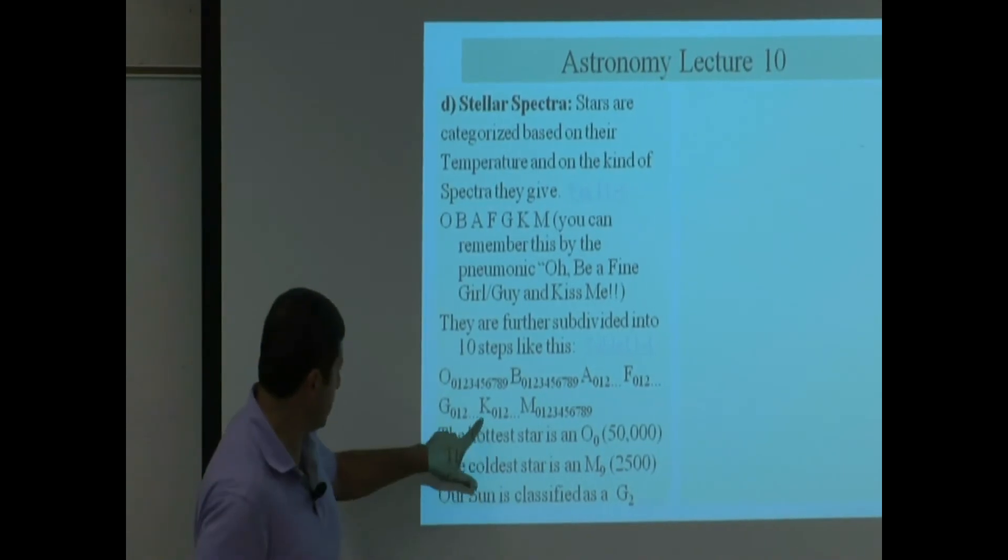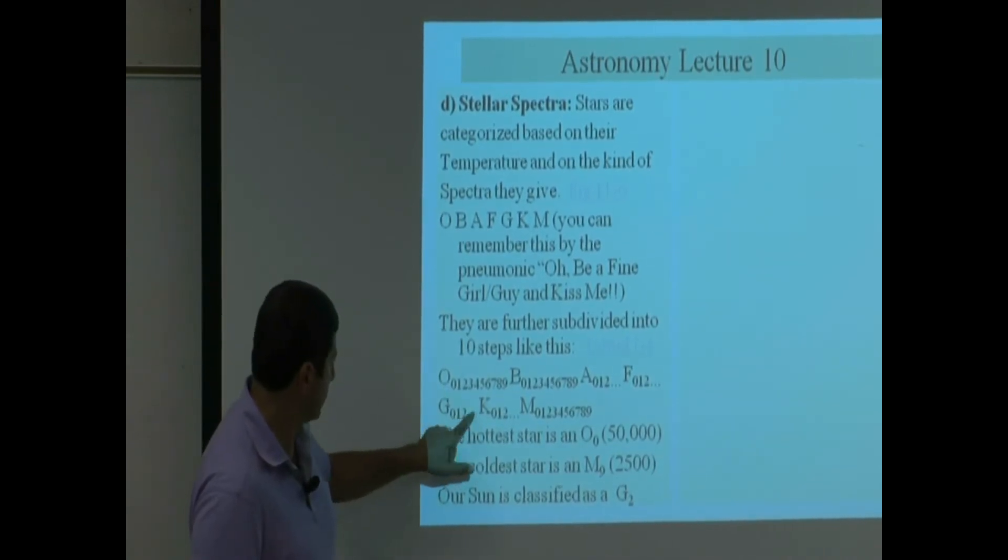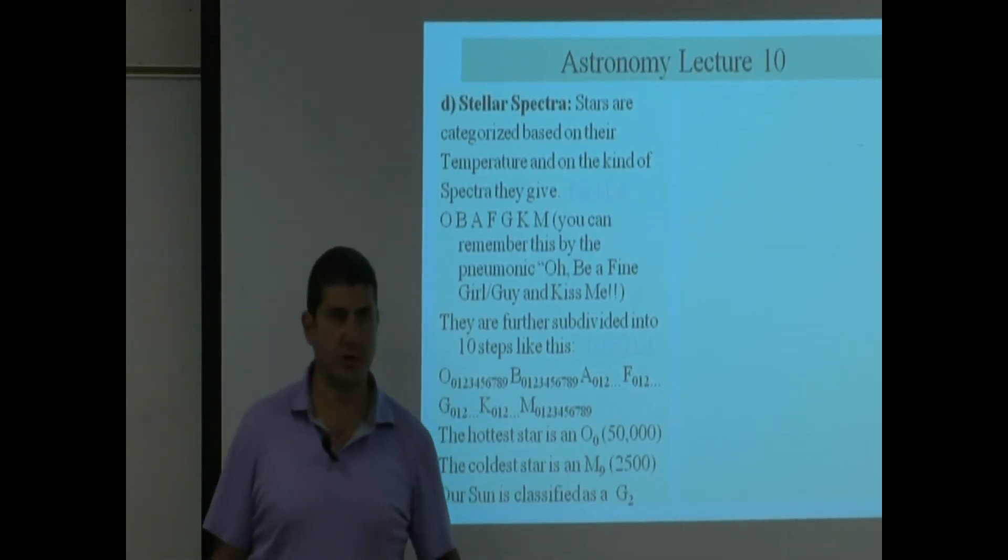So on this scale, what is our sun? G2. So where would the sun go? Basically here. Is it closer to the colder end or the hotter end? Yeah, you see, there's one, two, three, four letters ahead of the sun. So yeah, it is closer to the colder end, you see?